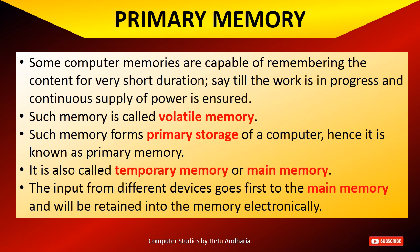First, about primary memory. Some computer memories are capable of remembering content for a very short duration — say, till the work is in progress and continuous power supply is ensured. Suppose you are preparing a PowerPoint presentation, you have not saved the file, and if electricity goes away, the data will get lost. So where was it stored till the power supply was on? It was stored in the primary memory. Such memory is called volatile memory and forms the primary storage device of a computer. Hence it is known as primary memory.